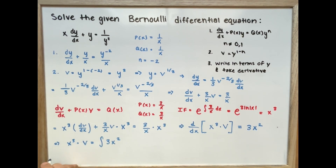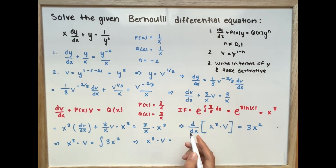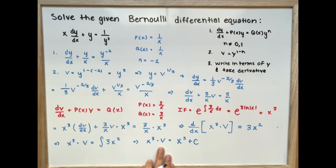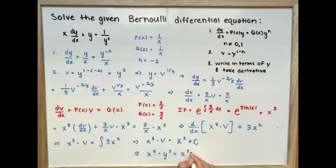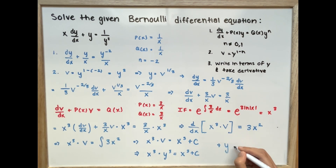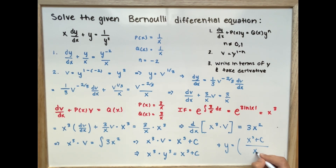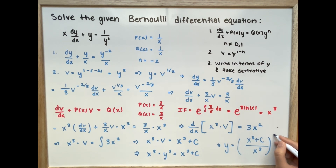Taking the integral, x cubed times v equals the integral of 3x squared, which is x cubed plus c. Substituting v back as y to the power of 3, we get x cubed times y cubed equals x cubed plus c. So our final equation is y equals the cube root of (x cubed plus c) divided by x cubed.